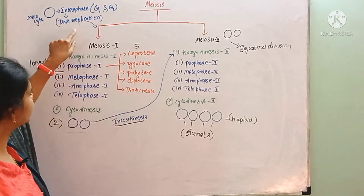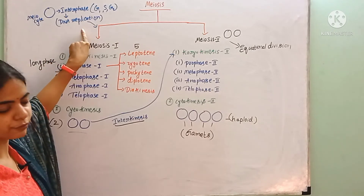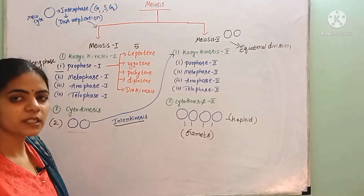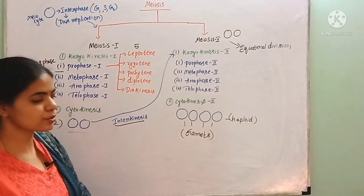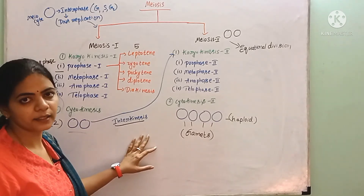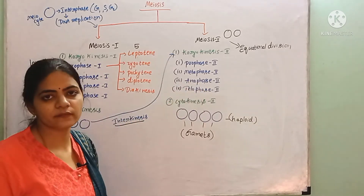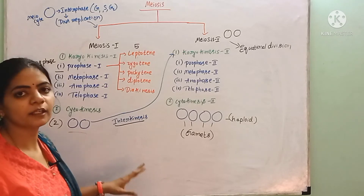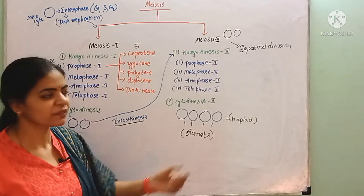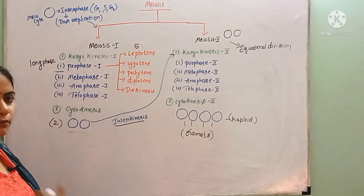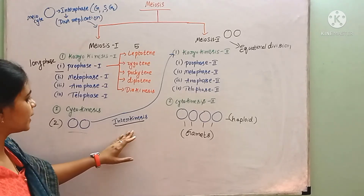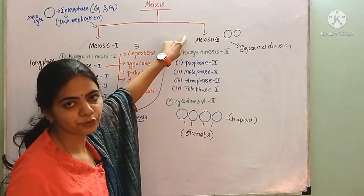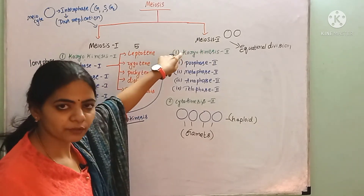During interkinesis there is some cell growth, RNA and protein synthesis, and in animal cells there is duplication of centrioles — but no DNA replication. Then the cells proceed into Meiosis II, which has karyokinesis II and cytokinesis II.